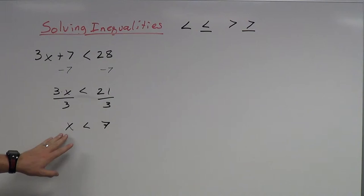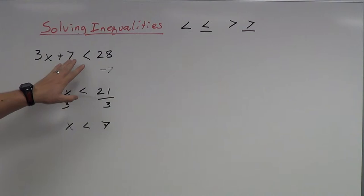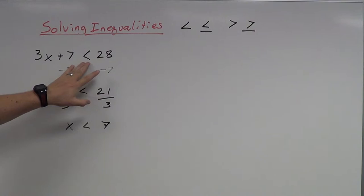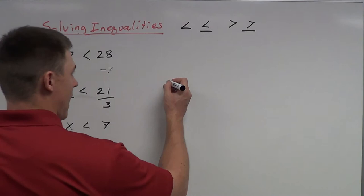But what about 7 itself? 7 is not smaller than 7. If I plug 7 in: 3 times 7 is 21, 21 plus 7 is 28. 28 is not smaller than 28, so that actually doesn't work. So 7 doesn't work in this case. But anything smaller than that — 6, 5, 4, 3, 2, 1 — anything smaller than that works.